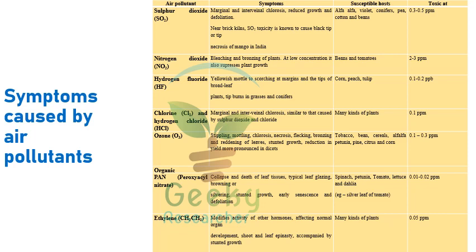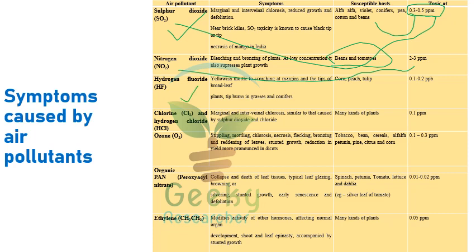Air pollutants also cause plant diseases. Sulfur dioxide (SO2) at 0.3 to 0.5 ppm affects susceptible hosts like alfalfa, violet, conifers, peas, cotton, beans, and mango. Nitrogen dioxide is toxic at 2 to 3 ppm, affecting beans and tomatoes. Hydrogen fluoride is the most dangerous air pollutant, toxic at just 0.1 to 0.2 ppb, affecting corn, peach, and tulip.